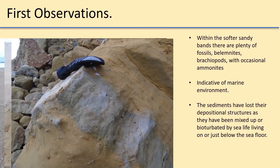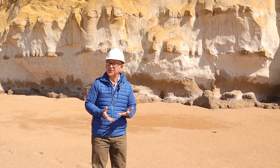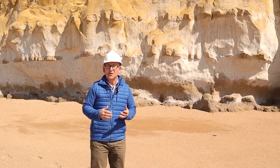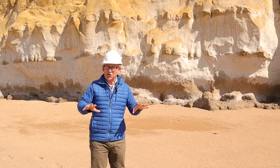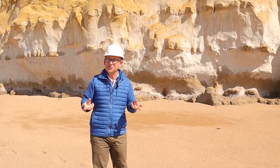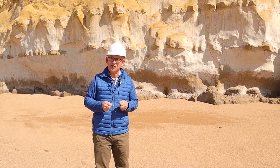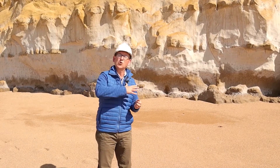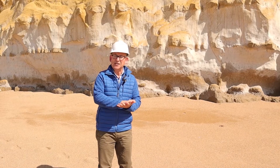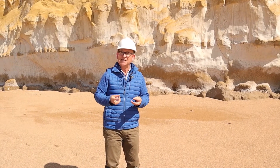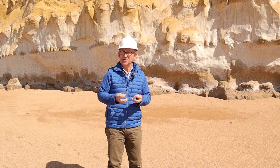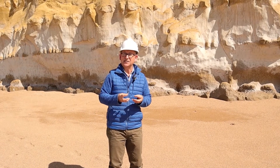The sediments have lost their depositional structures as they have been mixed up, or bioturbated, by sea life living on or just below the seafloor. All of this evidence suggests deposition in a shallow marine environment. The theory for the differences in calcium carbonate content is that offshore there used to be very dense shell beds, and during very high storm conditions these shell beds would have been washed ashore. Then during the process of solidifying, the shells would have dissolved and created this calcium carbonate cement, causing the density difference between these rocks.